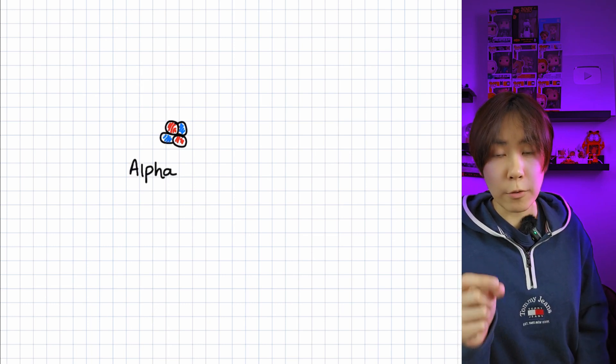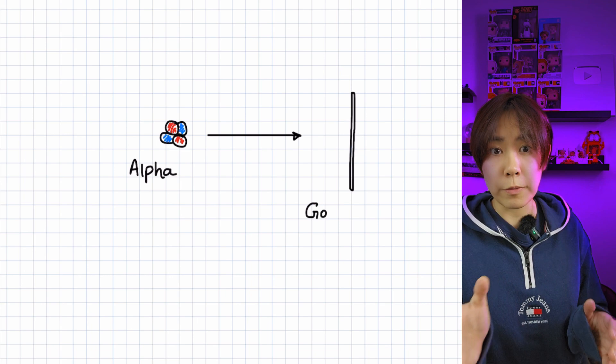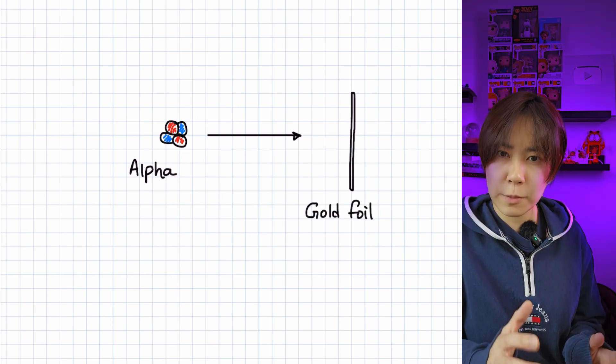He fired a narrow beam of alpha particles at a thin strip of gold foil. Let's use his experiment to find an expression for the nuclear radius.